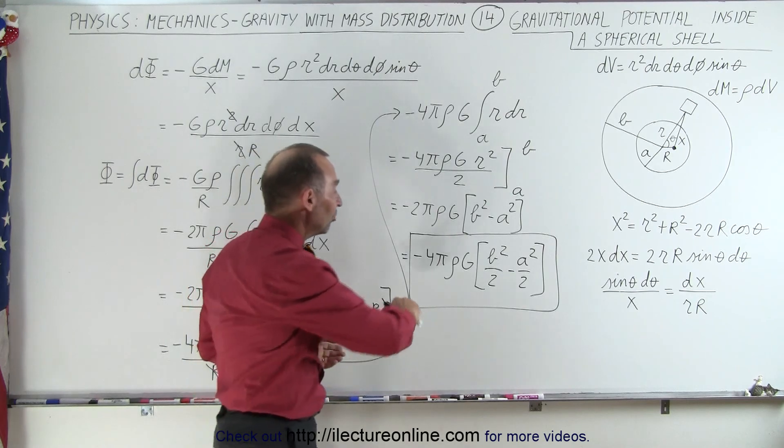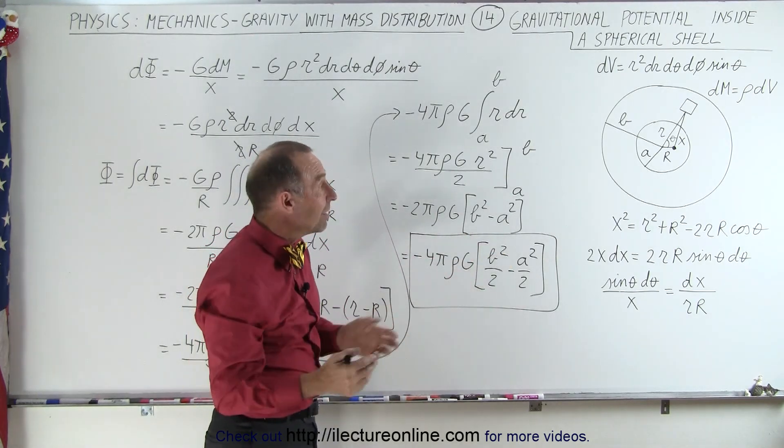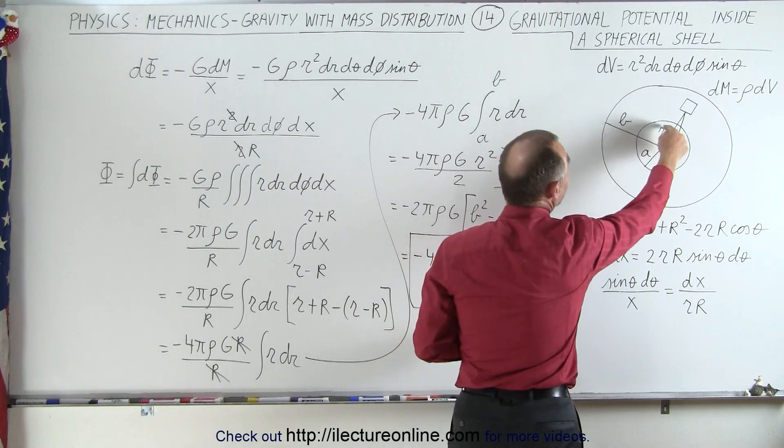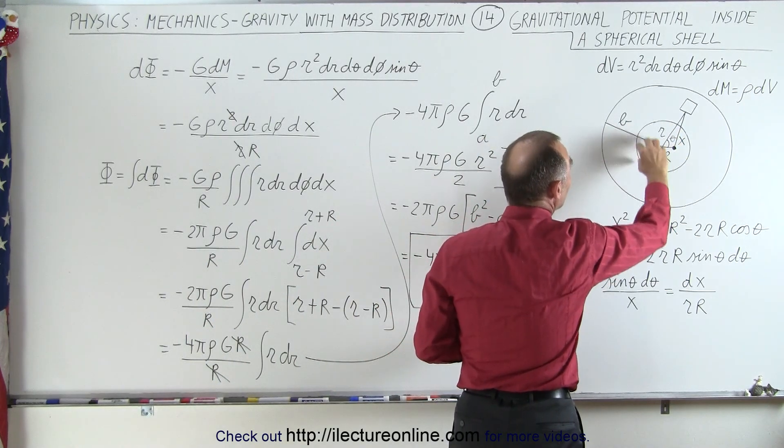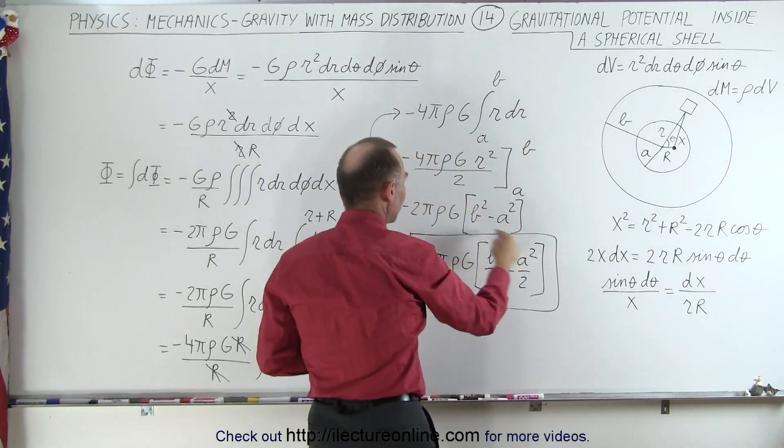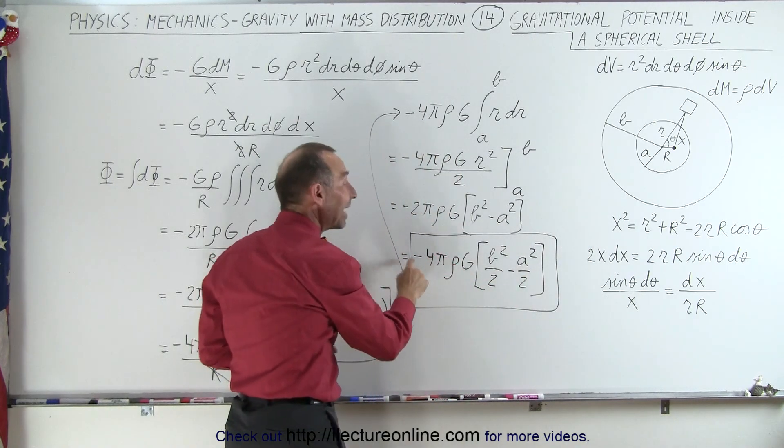And so therefore, since everything inside here is a constant, that means that it doesn't matter where we are inside that cavity. Anywhere inside that cavity, the gravitational potential will be equal to this amount. Notice that it's negative.